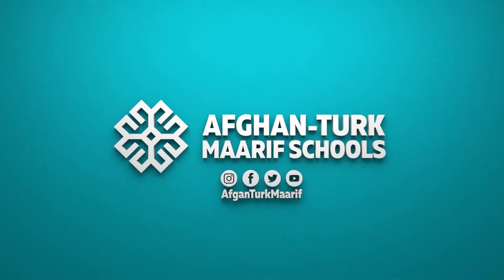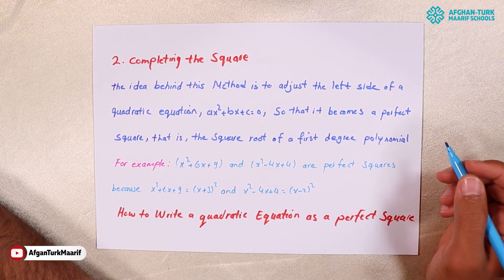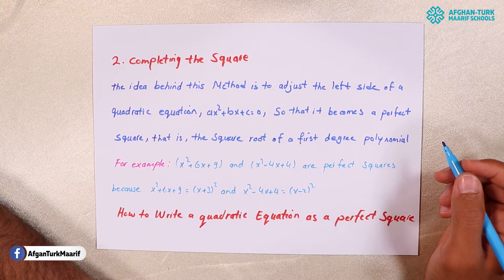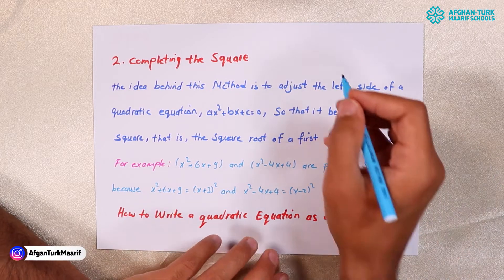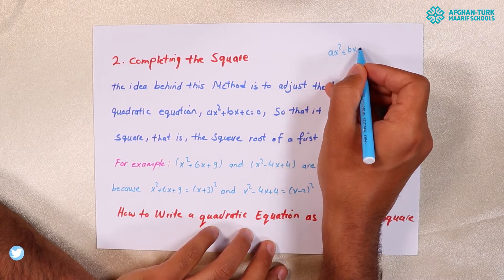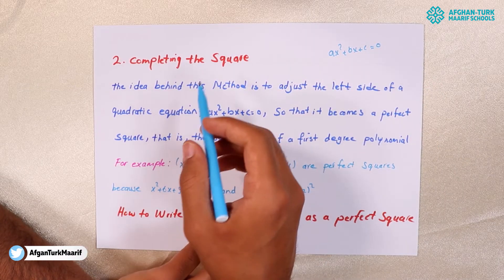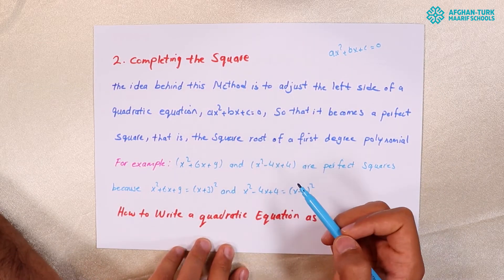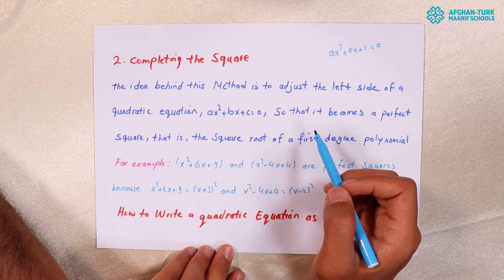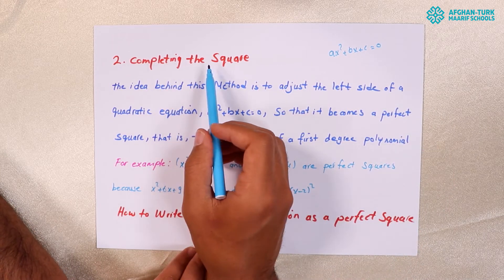Welcome to a new session. Today we are going to continue from the previous lessons and study the second method of solving the equation of the form AX squared plus BX plus C equals 0. This is the second method of solving questions like this: completing the square.